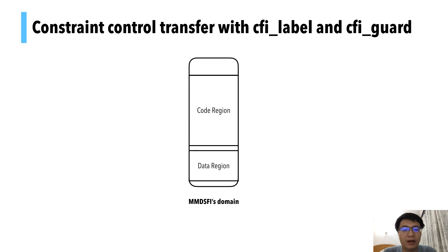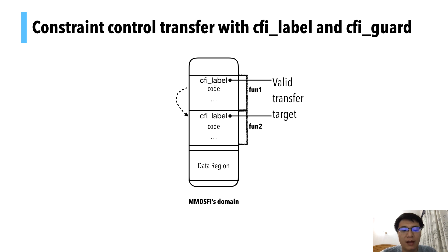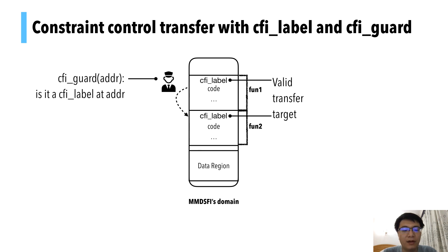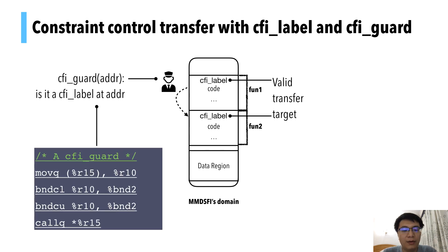For control transfer, we take a close look inside the code region. Assuming there are two functions in the code region and one line of code in function 1 wants to jump to function 2, we use CFI labels to mark all valid transfer targets. A domain's CFI label is unique in the whole system. Then we insert a CFI guard before the control transfer, which checks if there is a CFI label at the target address. The CFI guard reads the memory at the target, then compares it with bound two, which holds only the CFI label value — making these two bound checks equivalent to a compare instruction.